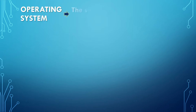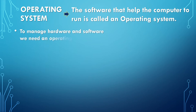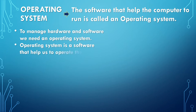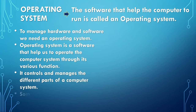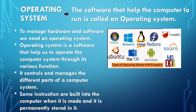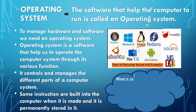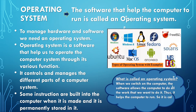Operating System: The software that helps the computer to run is called an operating system. To manage hardware and software we need an operating system. It is a software that helps us to operate the computer system through its various functions. It controls and manages the different parts of a computer system. Some instructions are built into the computer when it is made and permanently stored in it. When we switch on the computer, the software allows the computer to do all the work we want. Thus it helps the computer to run, so it is called an operating system.